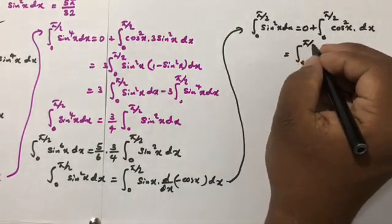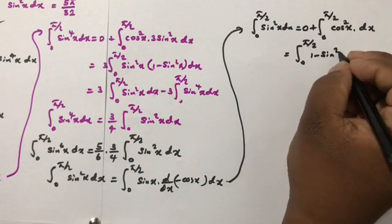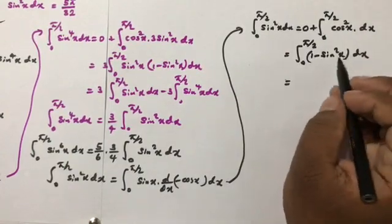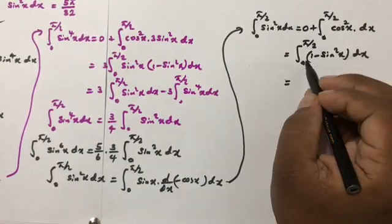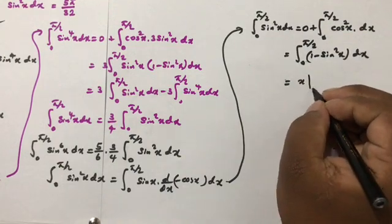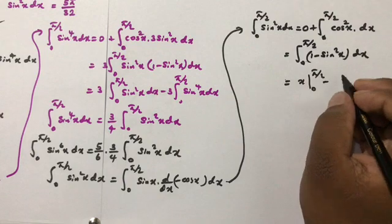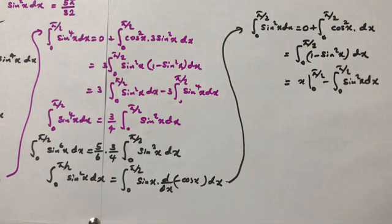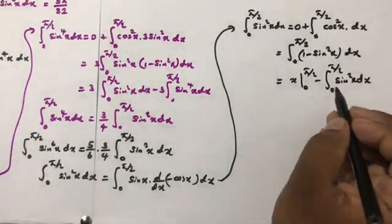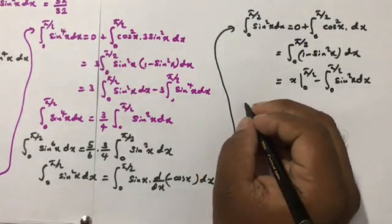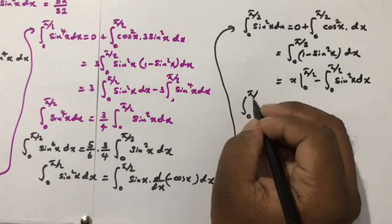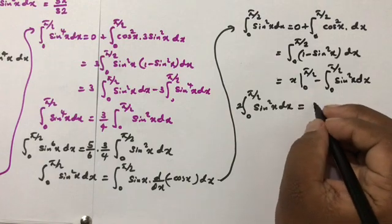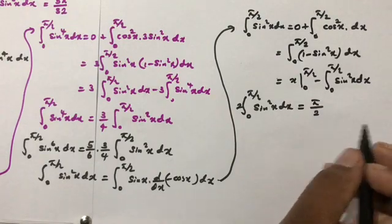Replacing cos²(x) with 1 − sin²(x) and splitting the integral, we get the integral from 0 to π/2 of dx minus the integral from 0 to π/2 of sin²(x) dx, which equals [x] from 0 to π/2 minus the same integral, giving π/2 minus the integral of sin²(x) dx. Taking the integral to the left gives 2 times the integral of sin²(x) dx equals π/2.